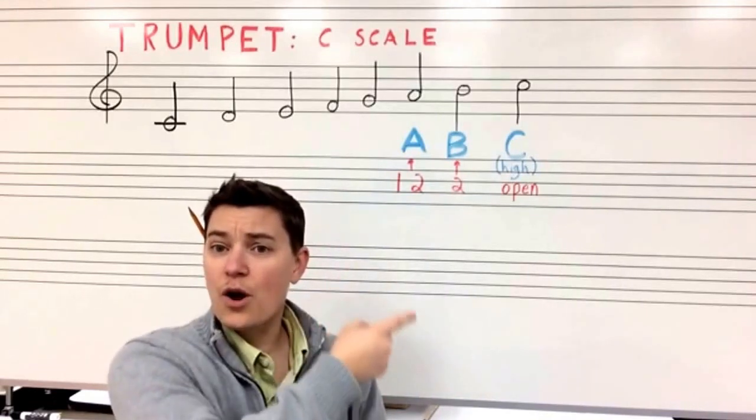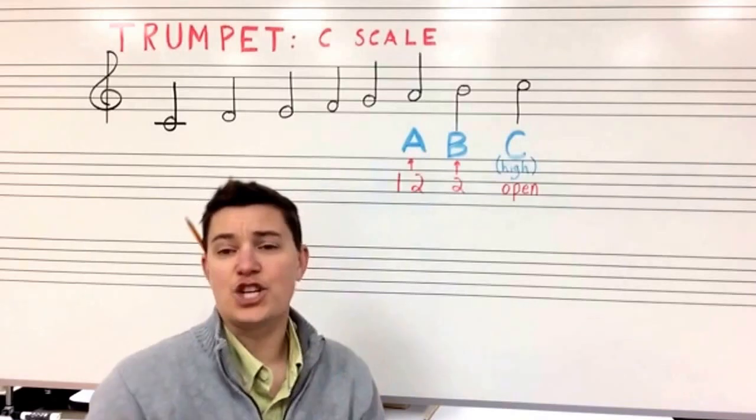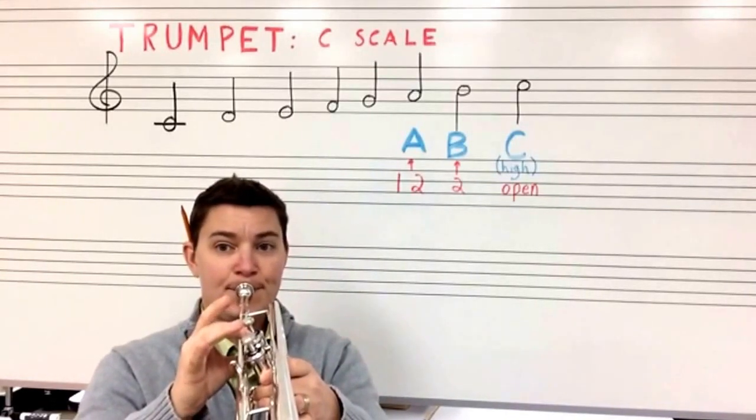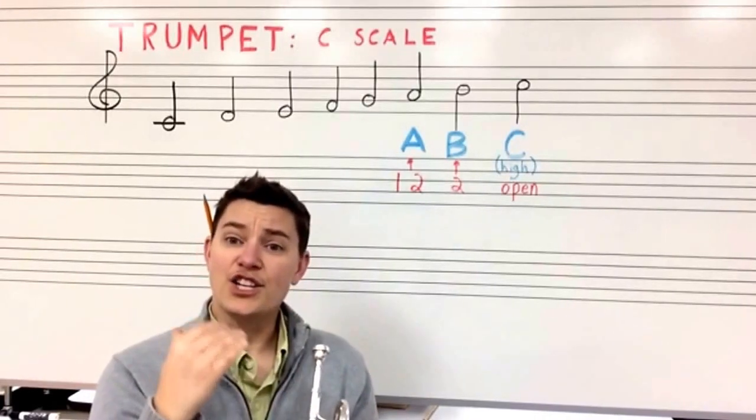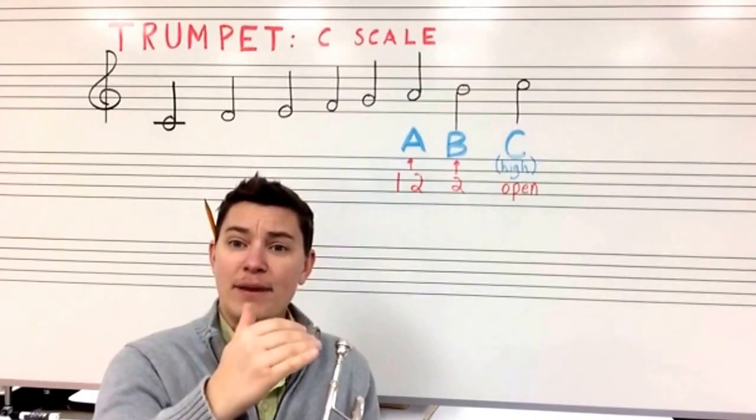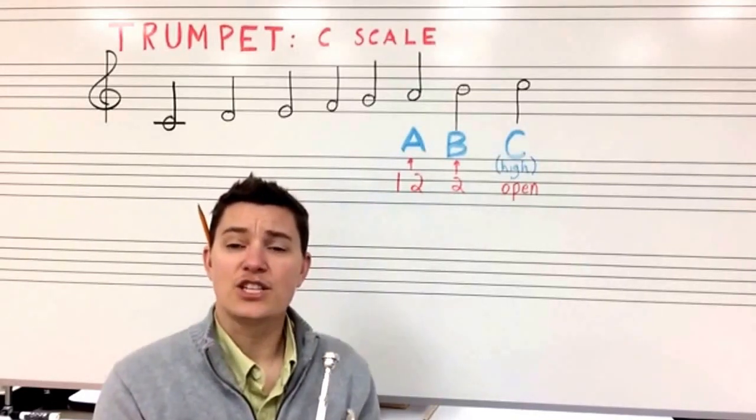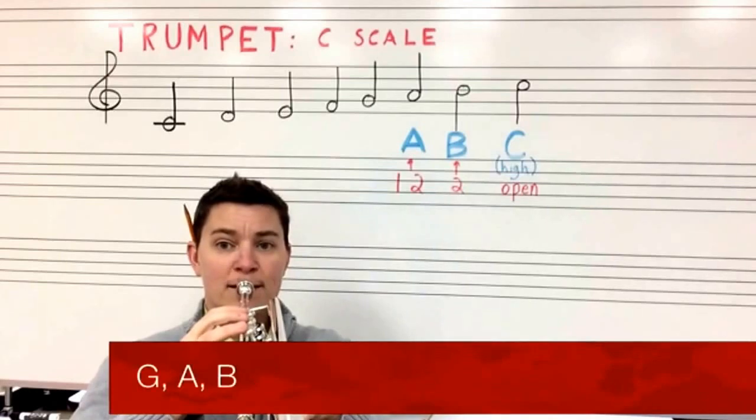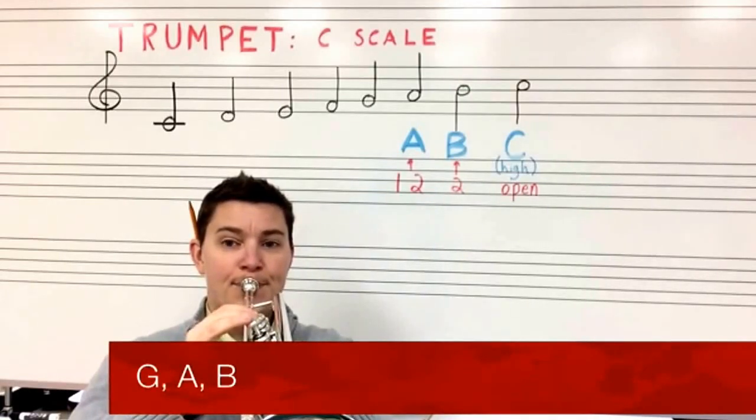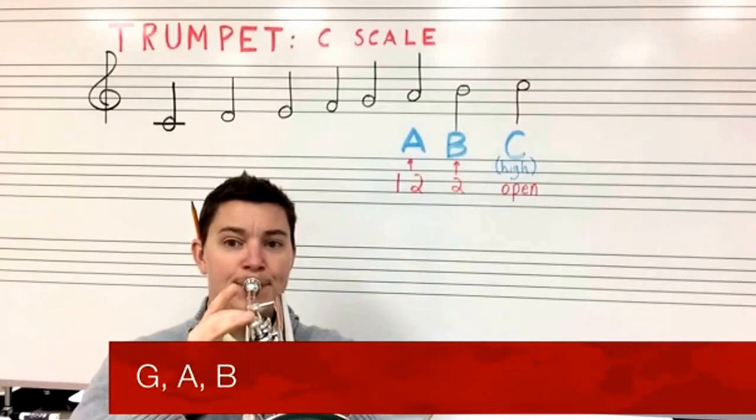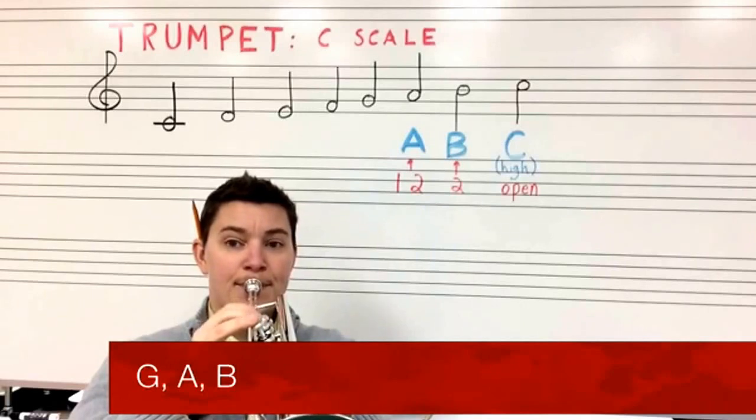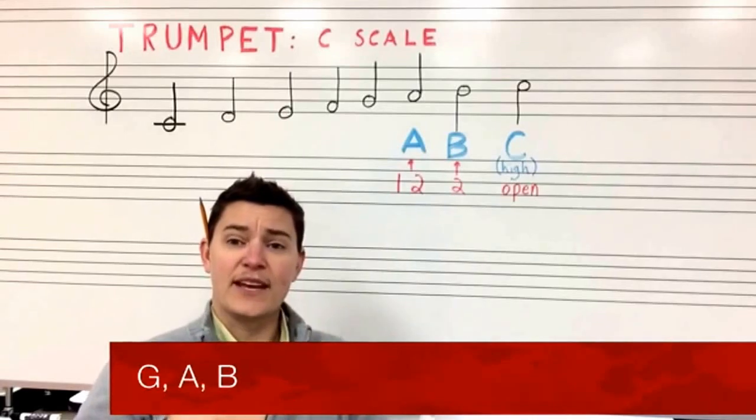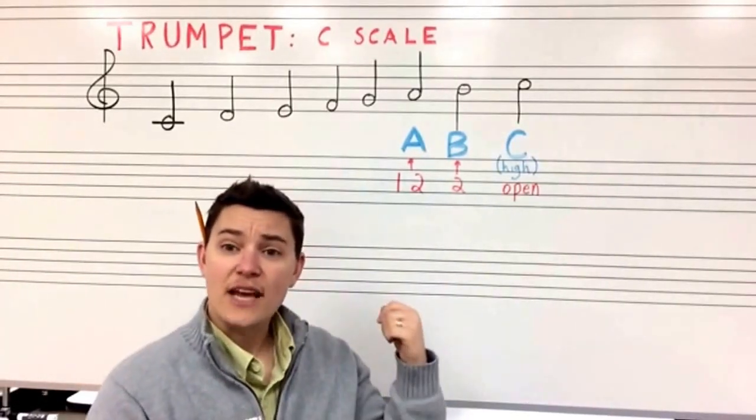From A we go up one to B and now we have just middle finger. You might try going G, A, B. So let's try that in half notes: G, A, B. Try it again. Each note should sound one higher than the other, the same as how they look.